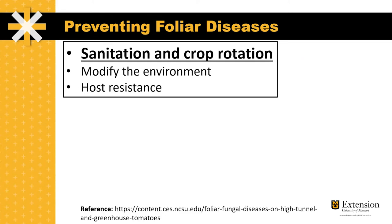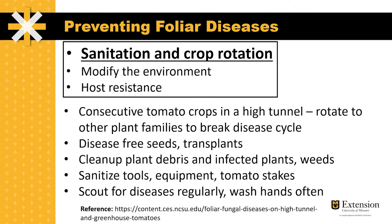Sanitation and crop rotation. Many high tunnel growers who've grown tomatoes year after year have started to notice issues with declining yields and disease pressure in their high tunnels. It's important to rotate to other plant families to break the disease cycle. You can also consider things like fallow periods, solarization, cover crops, as well as inserting different crops into your rotation.